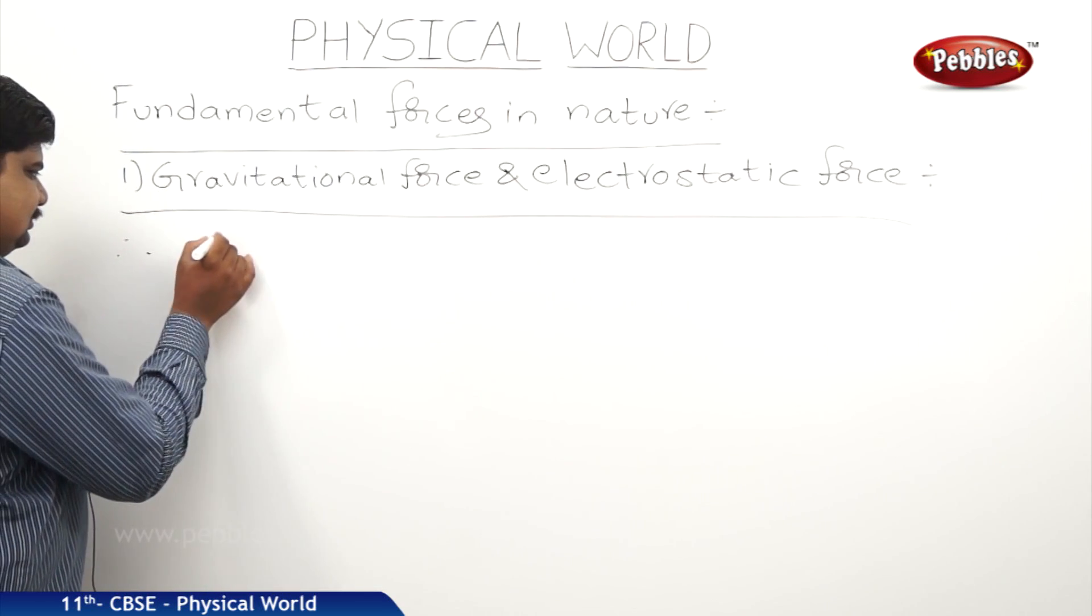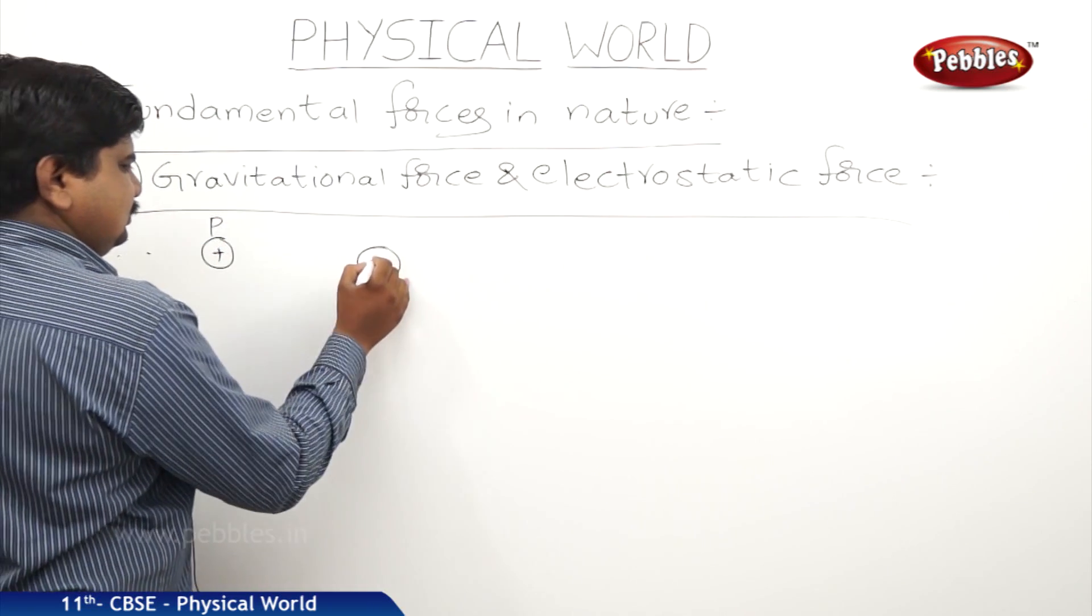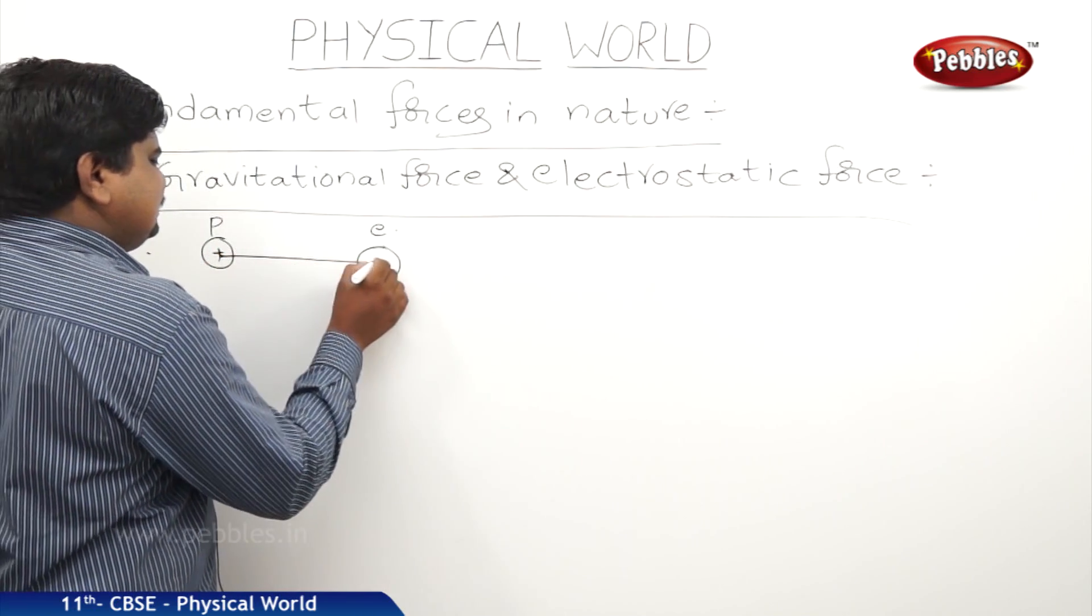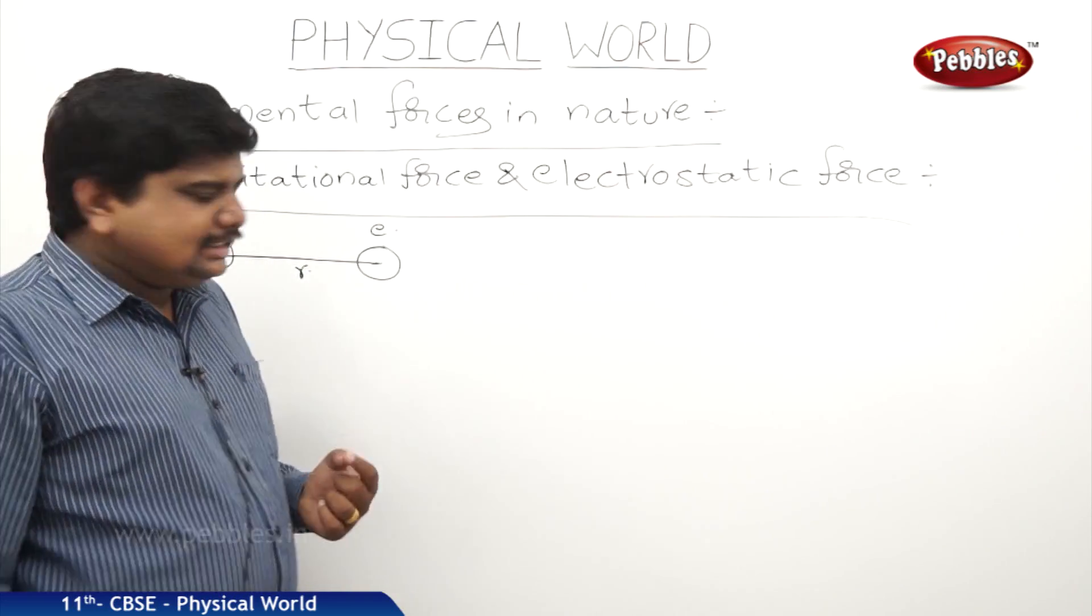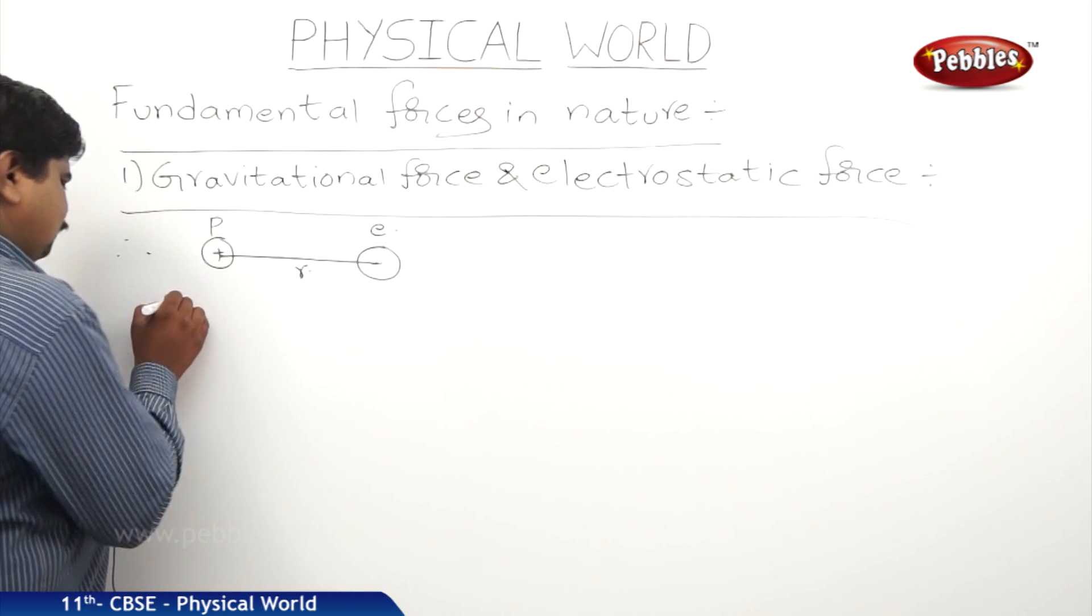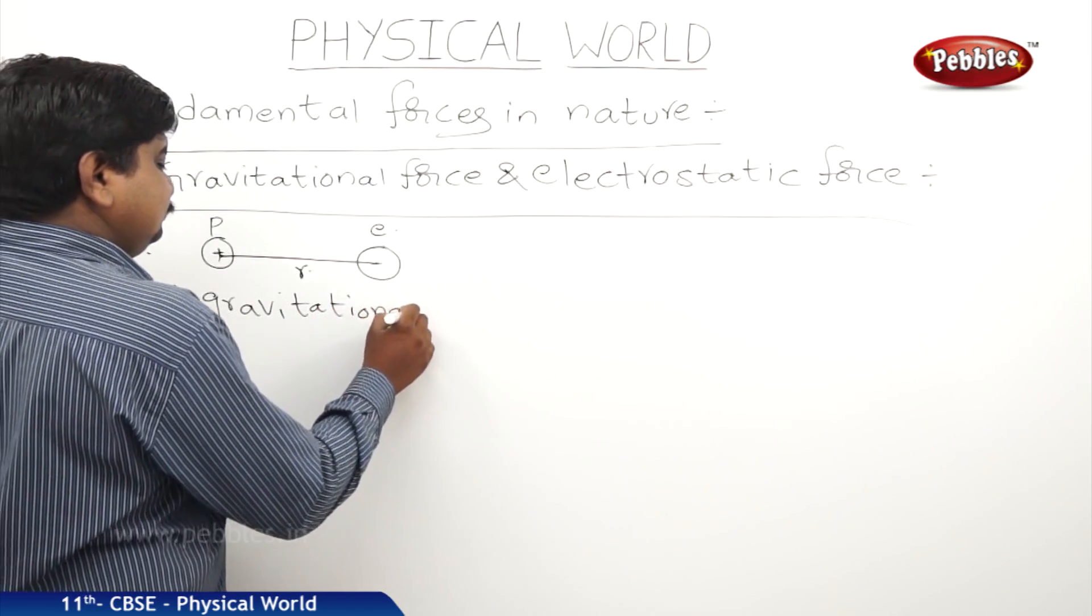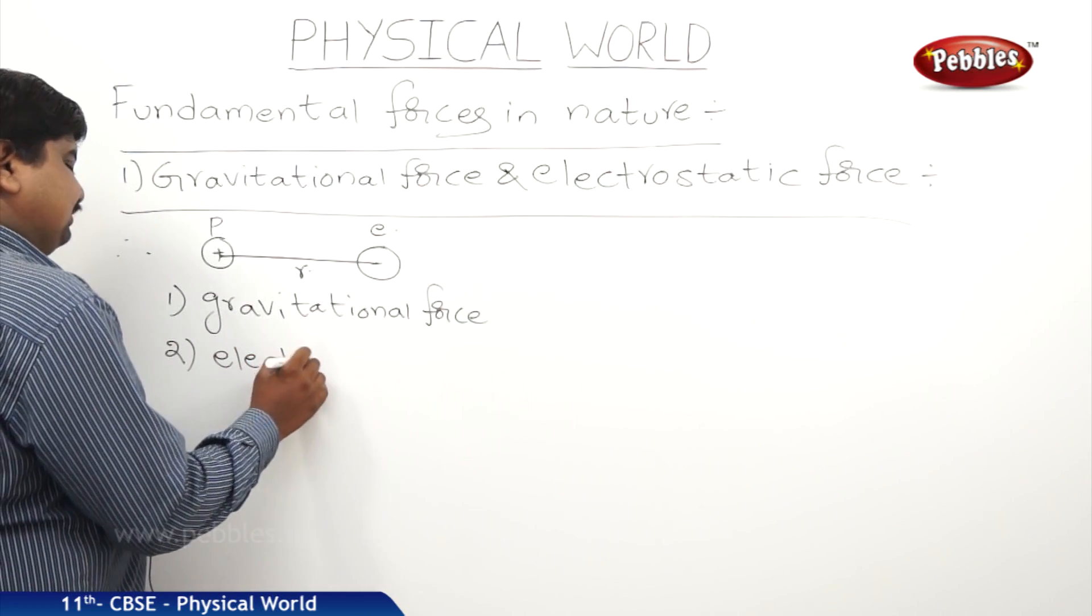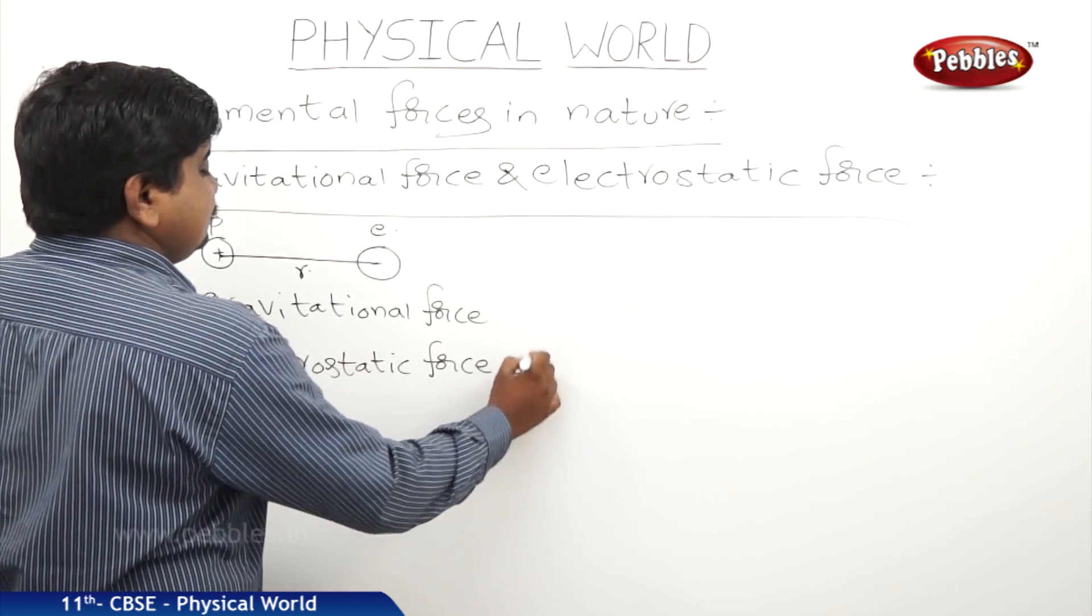Take two charges. Let us say this is proton, positively charged, this is electron, negatively charged. These two are separated by a distance small r in air. Whenever these two charges are separated by a finite distance and simply suspended in air, they should experience two forces. One is gravitational force. Second one is electrostatic force between them, or we can say this one as electrostatic force of attraction.